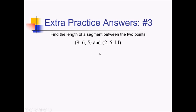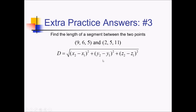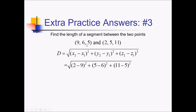On this problem, we're trying to find the distance — the length of a segment between these two three-dimensional points. So we're essentially using the distance formula, Pythagorean theorem, with three coordinates instead of two. We'll have the square root of (x2 minus x1) squared plus (y2 minus y1) squared plus (z2 minus z1) squared. Plugging things in, we've got the square root of (2 minus 9) squared plus (5 minus 6) squared plus (11 minus 5) squared. That's negative 7 squared which is 49, negative 1 squared which is 1, and 6 squared which is 36. So this is 49 plus 1 plus 36 equals 86. Square root of 86 — that's not divisible by any perfect squares, so this is as good as it gets.